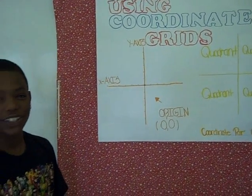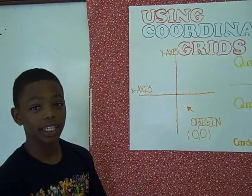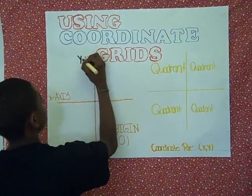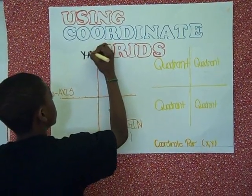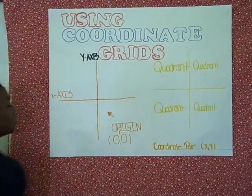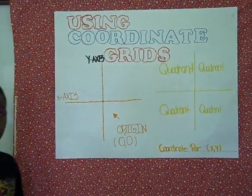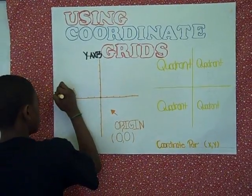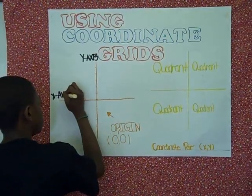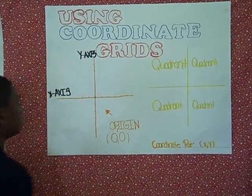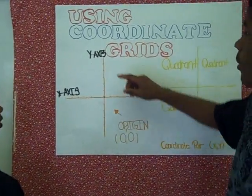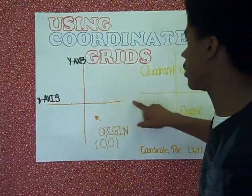I am going to show you how to use a coordinate grid by labeling the x-axis and the y-axis. This is the y-axis. Now I am going to label the x-axis. Make sure that the x-axis is equal to the line so you do not get mixed up. Also make sure the y-axis goes up and down and the x-axis goes across.